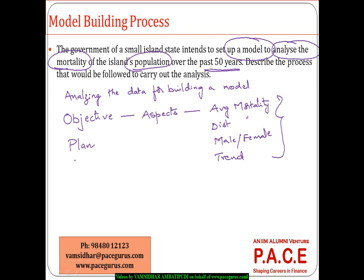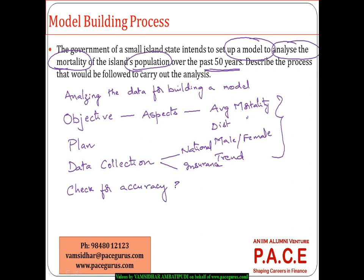Once planning is done, we move into the data collection process. Whatever data is available — either from national statistics or from insurance companies — different kinds of statistical data are typically collected. The accuracy and consistency of the data needs to be checked over a period of time. If there was a process change, that is a major layer to look out for.